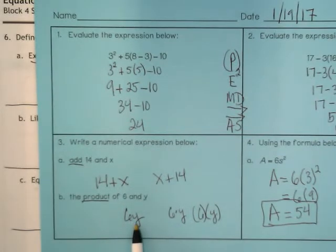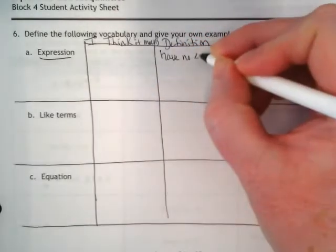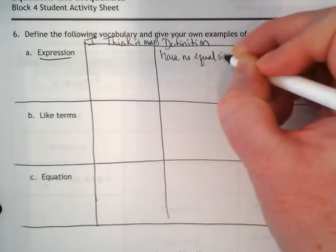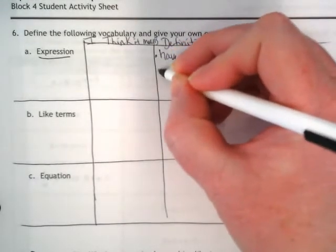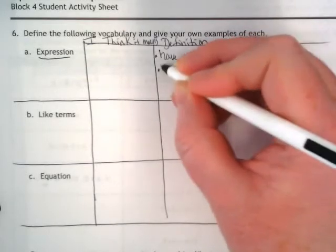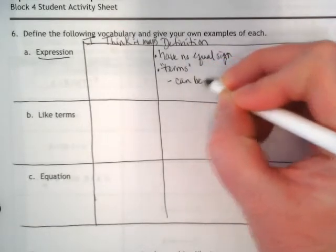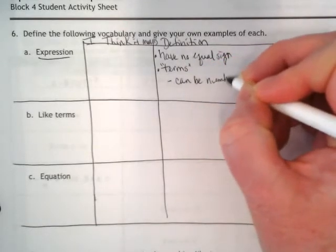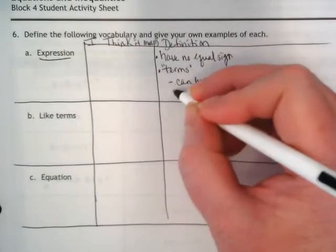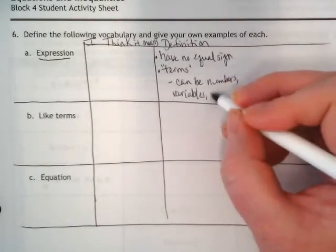This said write in numerical what, and did any of these come up with an equal sign? Did they have numbers and variables? Okay, so expressions have no equal sign. We're going to kind of make a bulleted list here. They do have terms, which can be numbers, variables, or both.